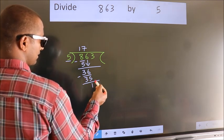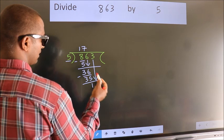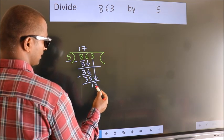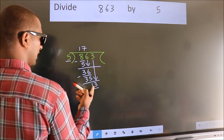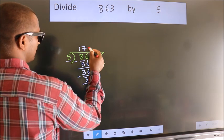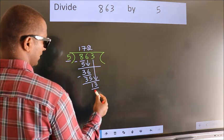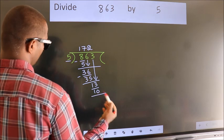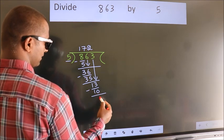After this, bring down the next number, so 3 down, giving us 13. A number close to 13 in the 5 table is 5 twos, which is 10. Now we subtract; we get 3.